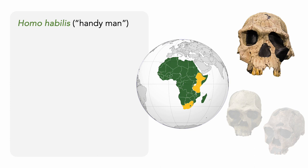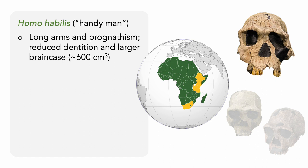Homo habilis was known as the handyman because they were some of the first to use stone tools. While habilis was still very ape-like in appearance — with long arms, short legs, and prognathism, a forward protruding jaw — they continued the evolutionary trends of reduced dentition and increased cranial capacity. Compared to the earlier australopithecines, their brain cases were significantly larger, with nearly a 50% increase in volume to a little more than 600 cubic centimeters. For reference, the brain cases of modern humans are nearly 1,400 cubic centimeters.